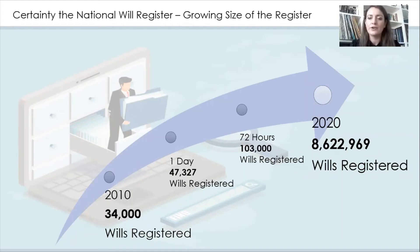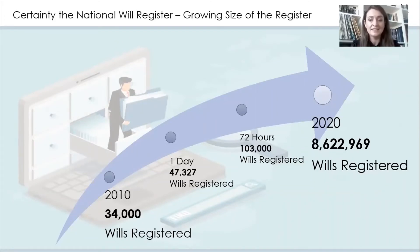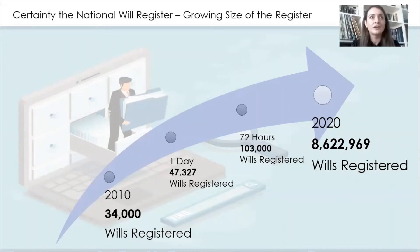As a final thought before I continue, I want you to think about your own circumstances as a legal professional. Does your firm have wills in storage right now where it's likely the client has passed away but no one has come forward to collect the will, or there's no internal knowledge that the will has been superseded elsewhere? And have you ever questioned whether an estate is truly intestate, whether the will presented is the latest will, or whether the client simply didn't know if a will or another will existed?